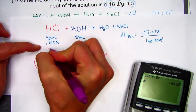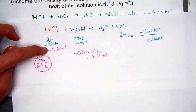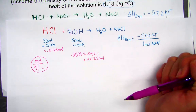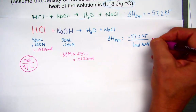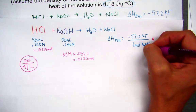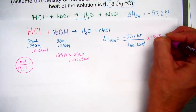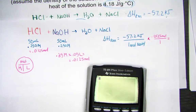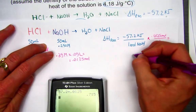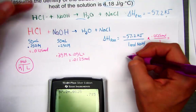Using volume times molarity puts us into moles of reactant. Now with 0.0125 moles of NaOH, negative 57.2 kilojoules would have been released for a whole mole, but we only delivered 0.0125 moles. So: 57.2 × 0.0125 = 0.715 kilojoules of heat released — shown as negative since it's released.